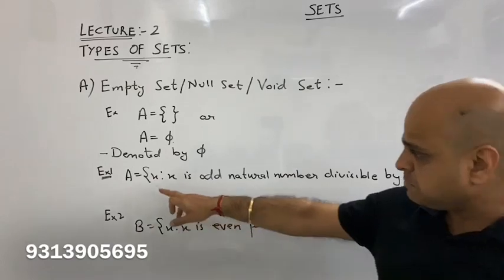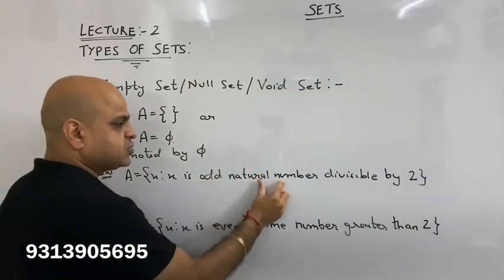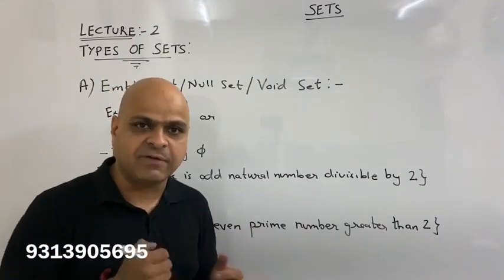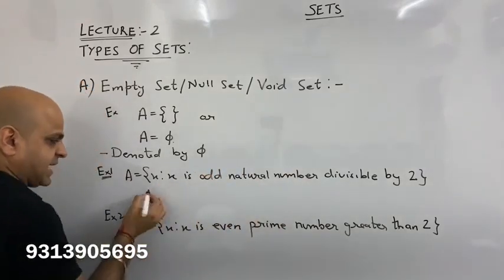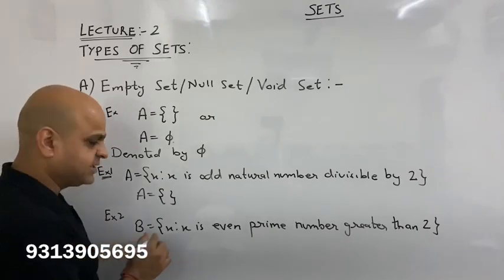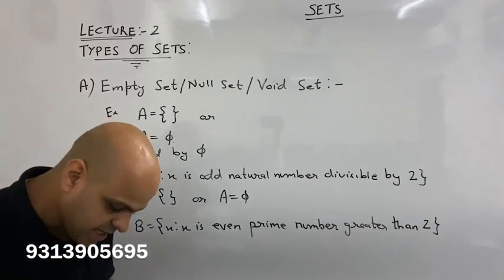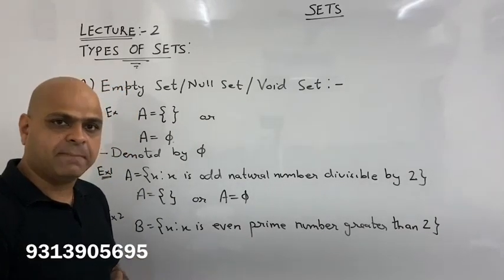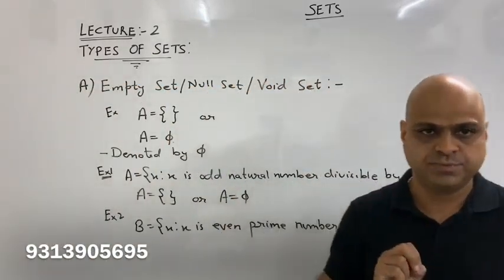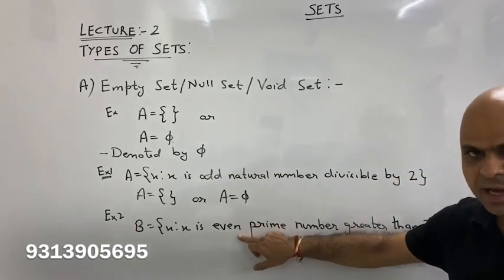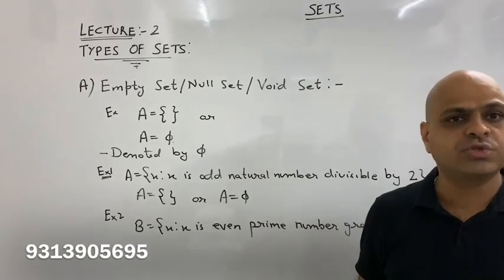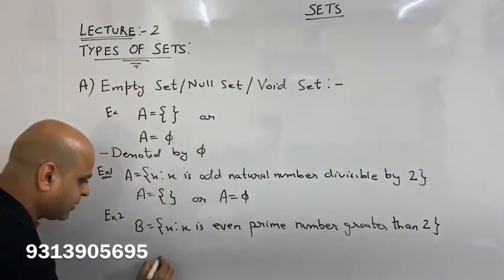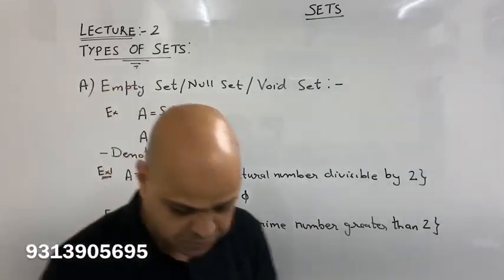Let us look at an example. X is an odd natural number divisible by 2, greater than 2. What does this mean? An even prime number greater than 2 — the smallest even prime number is 2. So the set of even prime numbers greater than 2 has no elements. Therefore, this is the null set.